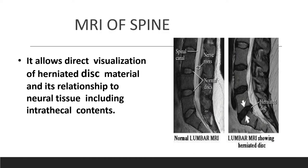The next investigation of choice is MRI. MRI is very useful to visualize the herniated disc material, identify its relationship to neural tissue, and assess intrathecal contents. Here you can see the disc herniated into the spinal canal at the L5-S1 junction. L5-S1 is the most common site of disc herniation, followed by L4-L5. It most commonly occurs between the ages of 40 to 50 and is more common in males.